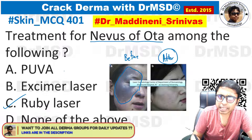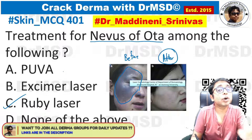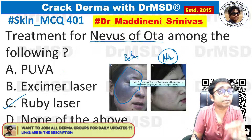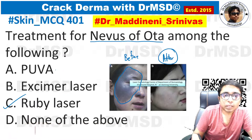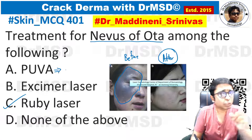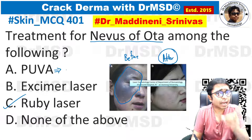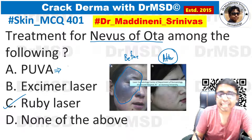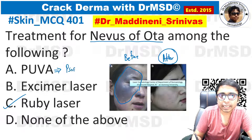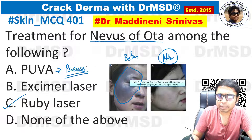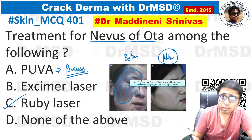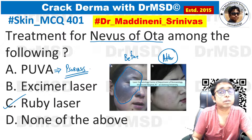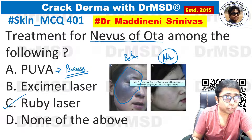If you observe option A and option B, both are examples of phototherapy. PUVA stands for psoralen along with UVA rays, and it is used commonly in psoriasis. Of course, vitiligo patients can also make use of PUVA therapy.